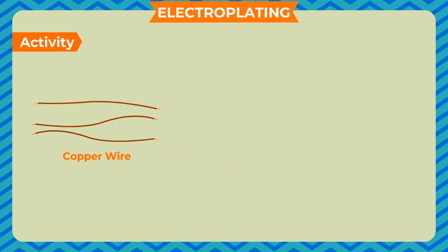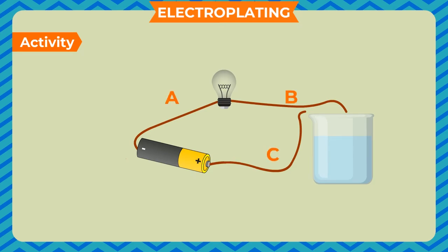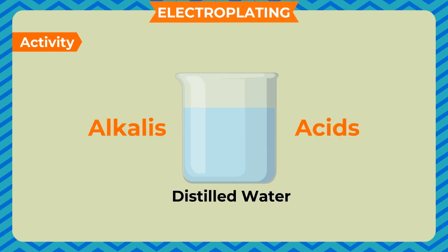To show that pure water does not conduct electricity, take three small pieces of copper wire, a dry cell, a bulb, and some distilled water in a beaker. Connect the bare ends of the copper wires through the bulb and cell, then dip the two bare ends in the distilled water. You will observe that the bulb does not glow, proving that pure water does not conduct electricity. Now, add some common salt to the distilled water and dissolve it by stirring with a glass rod. When the conducting wire is dipped in this solution, the bulb lights up, clearly proving that addition of salt makes distilled water a good conductor of electricity. This can be repeated using acids or alkalis instead of salts.